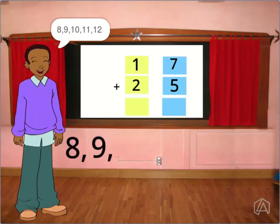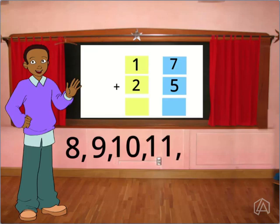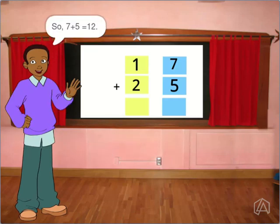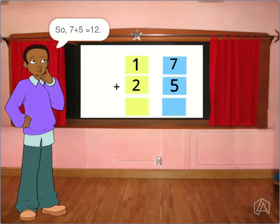8, 9, 10, 11, 12. So 7 plus 5 is equal to 12.